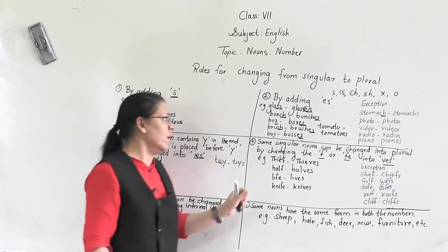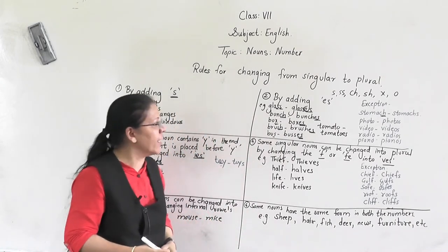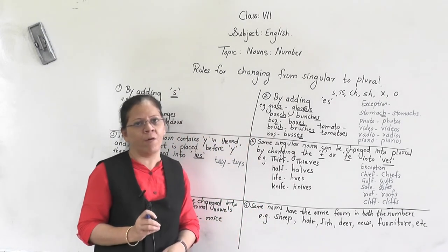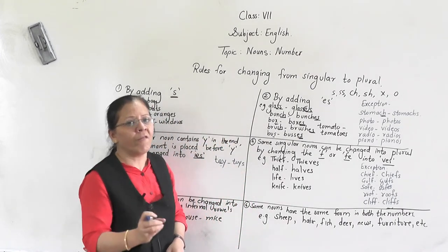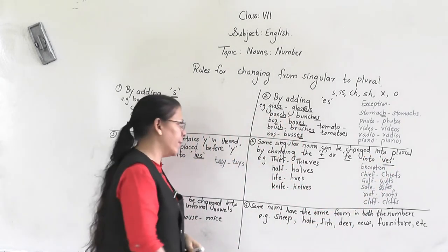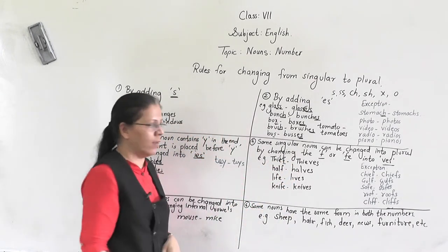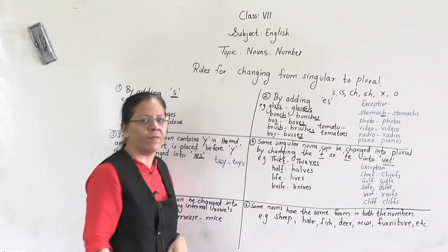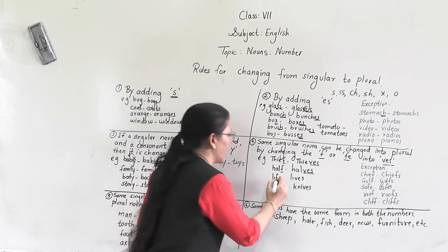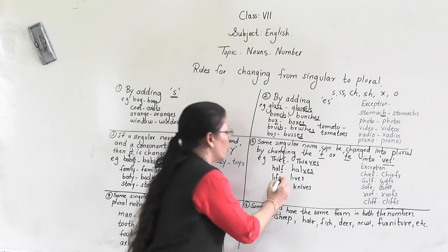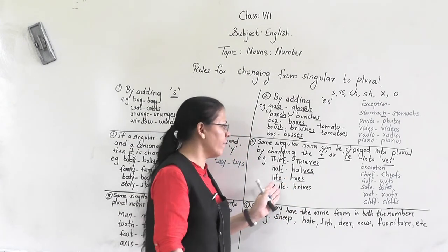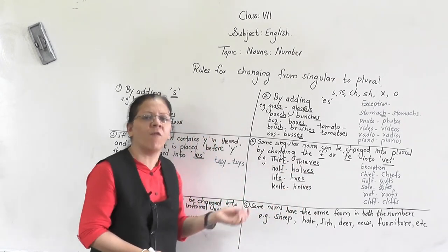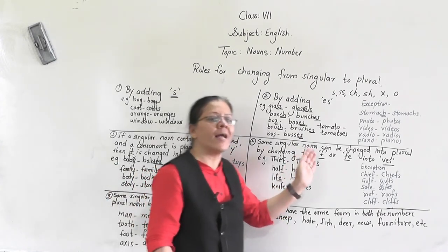Rule number four: some singular nouns can be changed into plural by changing the 'f' or 'fe' into 'ves'. Nouns ending in 'f' or 'fe' have that ending changed to 'ves'. For example, 'thief' ends in 'f' — drop 'f' and add 'ves' to make 'thieves'. 'Half' becomes 'halves'. 'Life' ends in 'fe' — drop 'fe' and add 'ves' to make 'lives'. Knife becomes knives. So words ending in 'f' or 'fe' take 'ves' in their plural form.